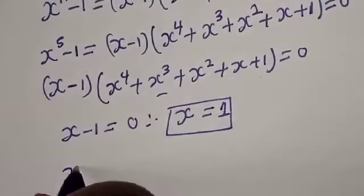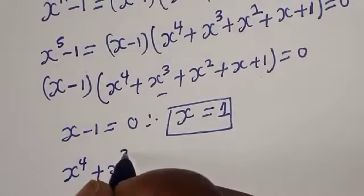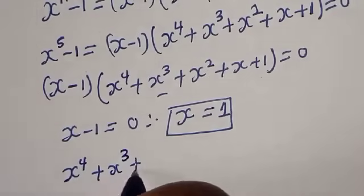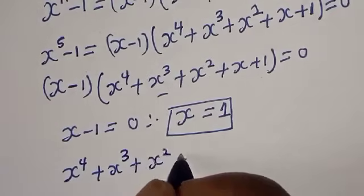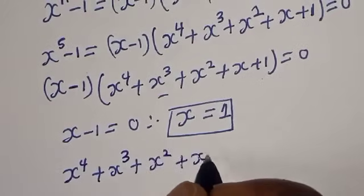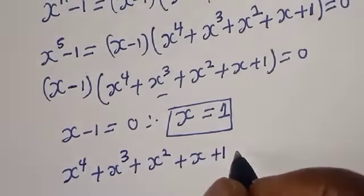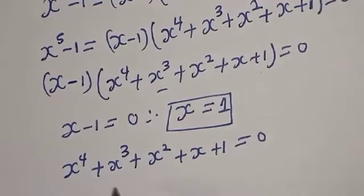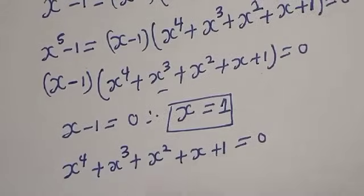The second case: x raised to power 4 plus x raised to power 3 plus x squared plus x plus 1 is equal to 0. Now let's divide all through by x squared.